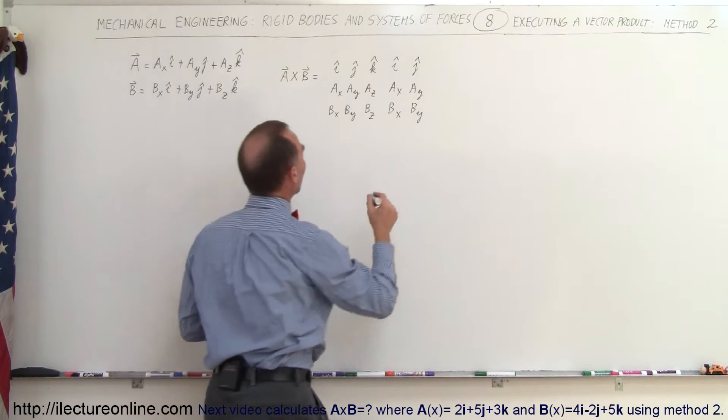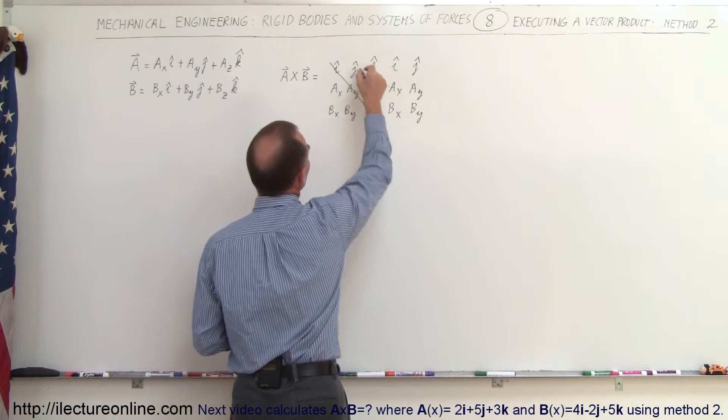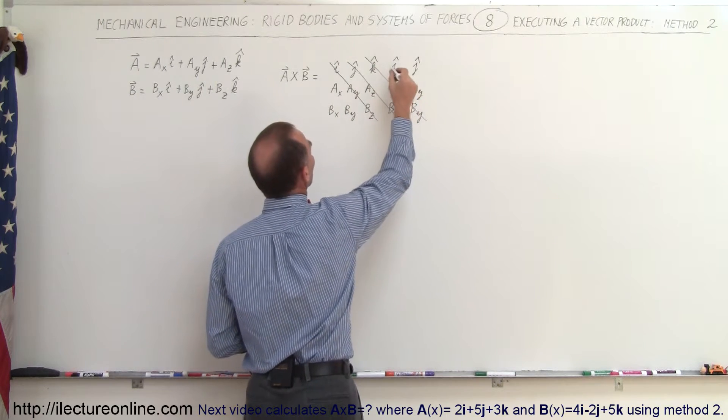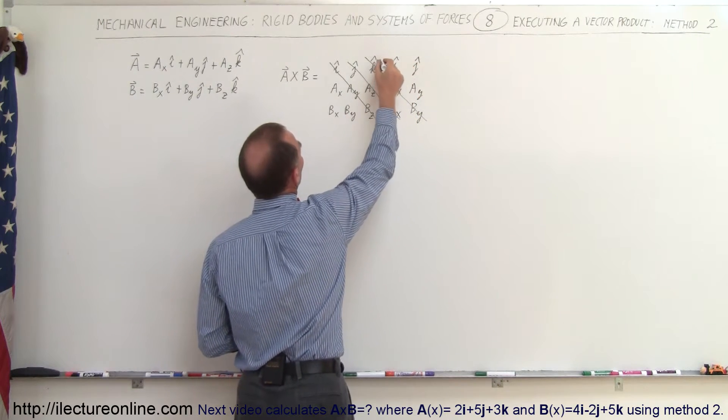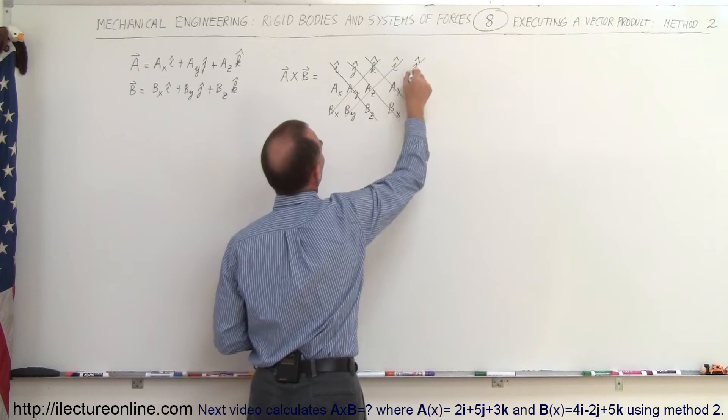Now what you do is you should draw lines diagonally across starting from the I. So you draw a line across this way, a line across this way, and a line across this way. And then you do it again going in the opposite direction starting from the K this direction, from the I this direction, from the J this direction.